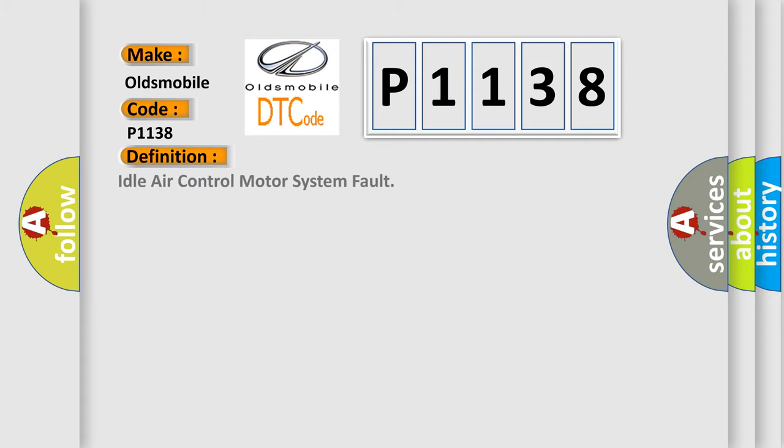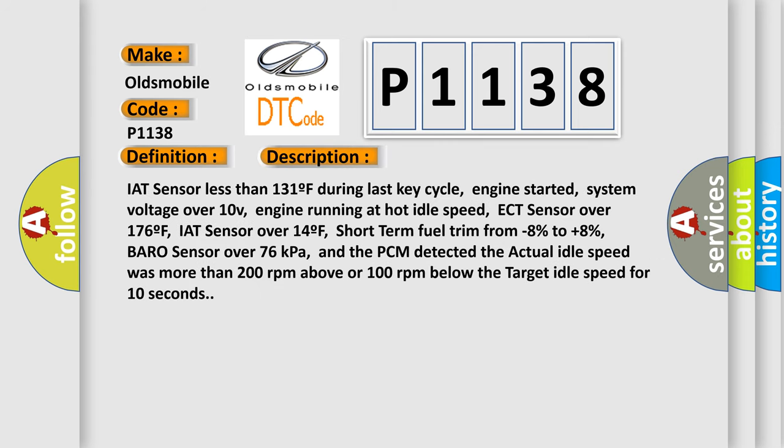The basic definition is: Idle Air Control Motor System Fault. The conditions for this DTC are: IAT sensor less than 131°F during last key cycle, engine started, system voltage over 10V, engine running at hot idle speed, ECT sensor over 176°F, IAT sensor over 14°F, short term fuel trim from minus 8% to plus 8%, and Baro sensor over 76 kPa.